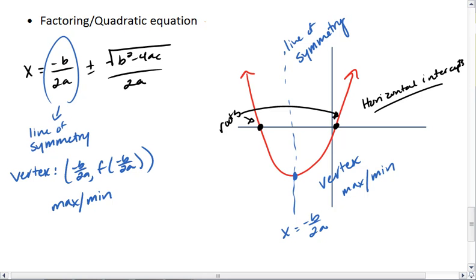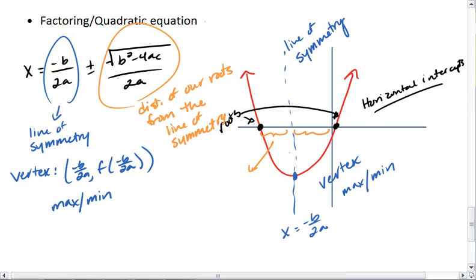We then see that the second part of the equation is the distance of our roots from the line of symmetry. So this distance and this distance are both the value of b squared minus 4ac rooted all over 2a, which is why we have a plus or minus. Because we need to move to both the right of the line of symmetry and the left of the line of symmetry.